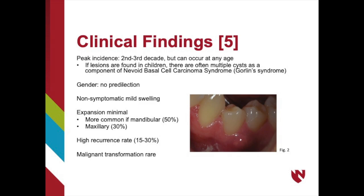There is no predilection for males versus females, and upon clinical examination, the OKC will present as a non-symptomatic mild swelling. In Figure 2, you can see a mild swelling located in the mandible. Expansion is usually minimal with the OKC; however, it is more common if it is located in the mandible versus the maxilla. The OKC also has a high recurrence rate of about 15–30%, and malignant transformation is rare.